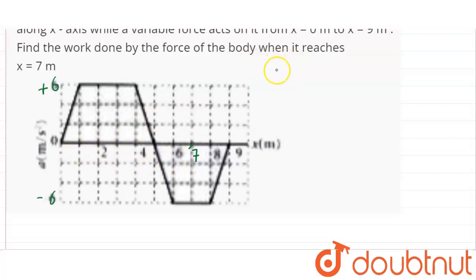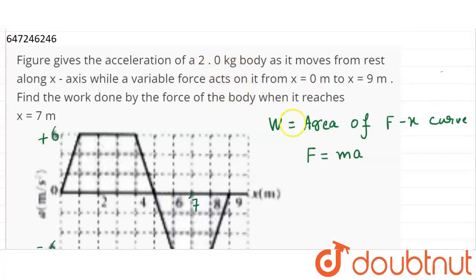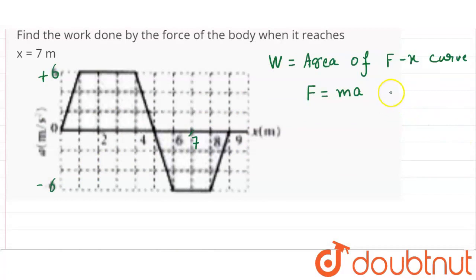We know that work done equals force into displacement. And force is equal to mass into acceleration. So, if we multiply the y-axis values (acceleration) by mass, they will convert to force, and the graph will become a force-displacement graph. Then the area under it will give us work done. With mass m=2kg, F = 2a.